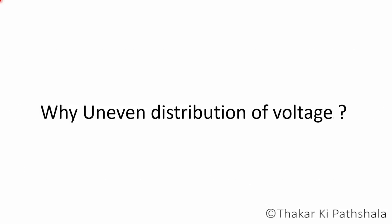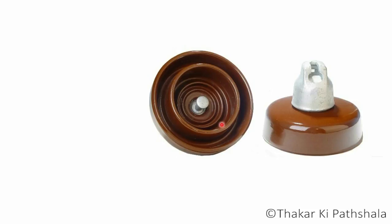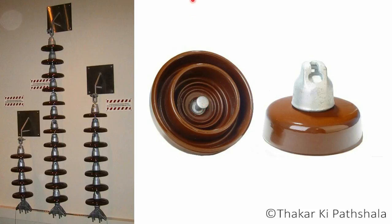First of all, the root cause of all this is uneven distribution of voltage. If you look at a high voltage transmission line, you will see a string of disc type insulators, and if you notice, the insulator disc has metal fittings on it. These metal fittings are conducting and the porcelain disc is the insulator. So a certain amount of capacitance is being formed between the metal fittings.